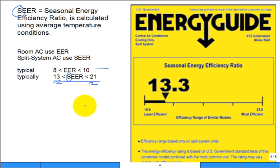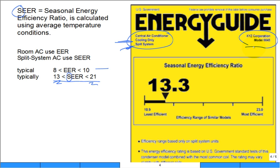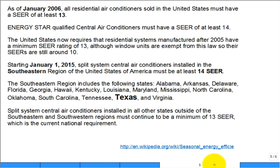Here's an example EnergyGuide label for a central air conditioner — cooling only, no heat pump, split system with an outdoor condensing unit and an indoor evaporator. This is a made-up XYZ manufacturer with a certain model number, and you can see the Seasonal Energy Efficiency Ratio is given as approximately 13.3.